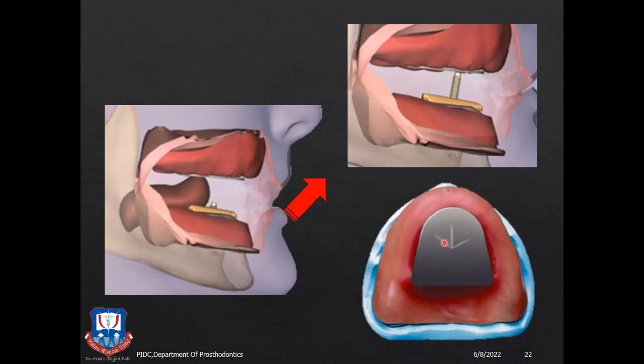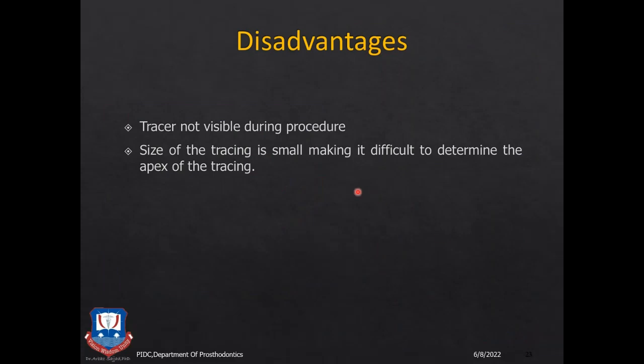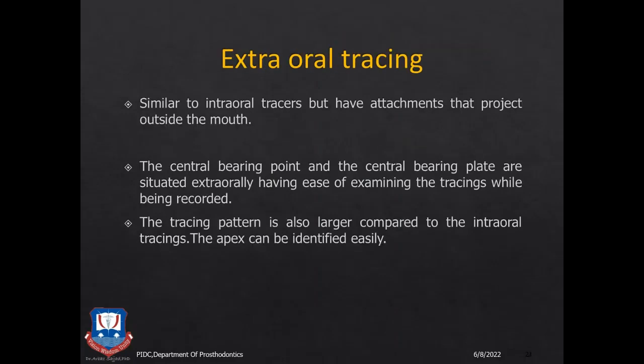The disadvantage of these internal tracers is that the tracing is not visible during the procedure — the operator cannot guide the patient and can only trust that the patient understands the instructions. It may require multiple repeated attempts to create a proper ideal arrow for centric relationship, and the size of the tracing is sometimes very small, making it difficult to determine the apex of the trace.